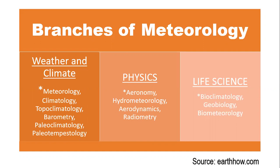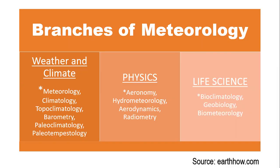Here are 15 branches of meteorology according to earthhow.com — this is how they classified the branches of meteorology. Their major categories include weather and climate, physics, and life science. The focus of those under weather and climate has six sub-branches, physics has four, and life science has three. These categories involve the science of meteorology which basically deals with weather and climate, then atmospheric physics applying physical processes to meteorology such as aerodynamics, radiometry, and geomagnetism.